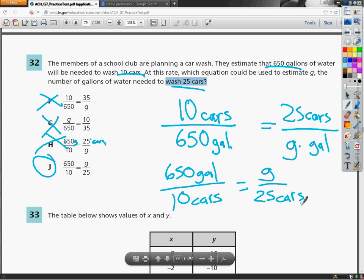So that's how you would set it up. Just make sure that gallons are on top, cars are on the bottom, or the opposite. Cars are on top, gallons are on the bottom. As long as the units match on top and bottom, your proportions should be set up correctly.